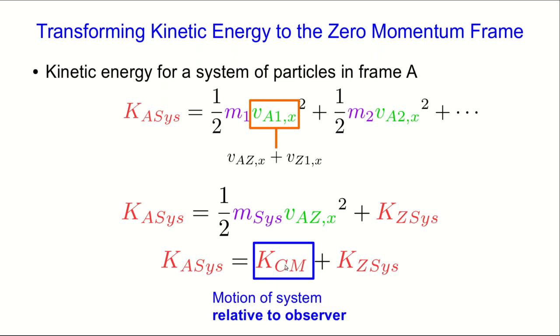And notice that it really only involves motion of the system relative to the observer, right? This velocity component here is to do with how the zero momentum frame moves relative to the observer.